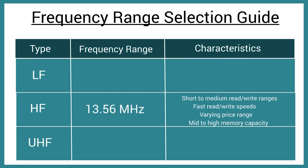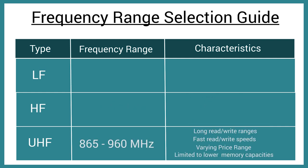High frequency RFID occurs at 13.56 MHz. This range has a short to medium read-write distance with a faster read-write speed, and can have mid to high memory capacity depending on the model used. Ultra-high frequency RFID ranges between 865 to 960 MHz — the most effective for long-distance inventory tracking, with fast read-write speeds but typically limited to lower memory capacities. RFID frequency settings are fully dependent on the surrounding environment or application, including the amount of information in the tag, processing speed, read-write distance, or the presence of metal.